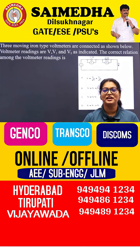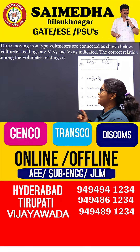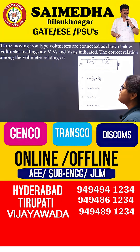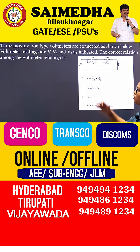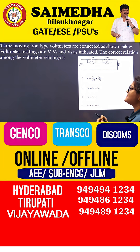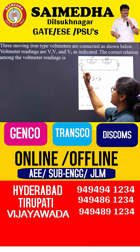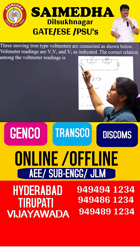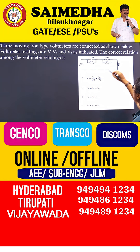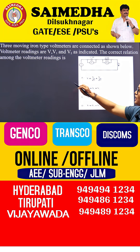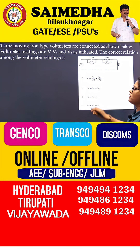Hello my dear aspirants. Welcome to Sai Medha. Three moving iron type voltmeters are connected as shown below. The voltmeter readings are V, V1 and V2 as shown in the figure. The question asks for the correct current relation among the voltmeters.